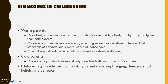Warmth and coldness, and restrictiveness and permissiveness. Warm parents are more likely to be affectionate, and children of warm parents are more warm and accepting themselves. Warm parents are less likely to physically discipline their children. Parental warmth is related to children's social and emotional well-being. Cold parents may not seemingly enjoy their children and may have few feelings of affection for them. Child rearing itself is reflected by the parent's own upbringing, their own beliefs, and genetics play a role as well.